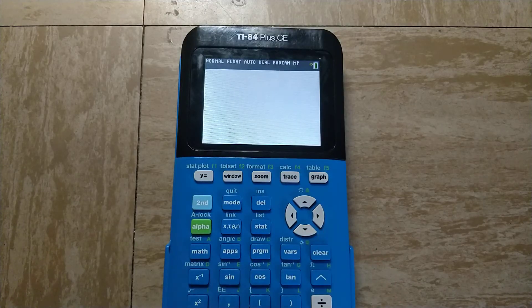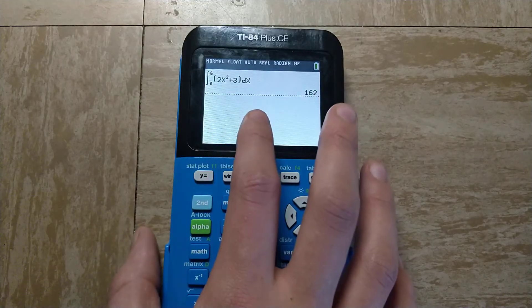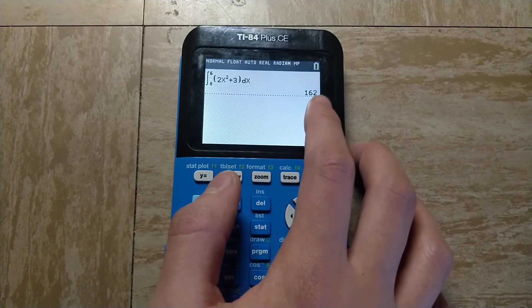So then just press enter, and you'll see that the definite integral from 0 to 6 for 2x squared plus 3 is equal to 162.